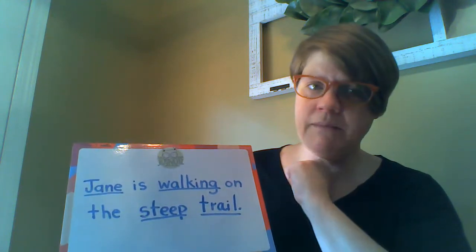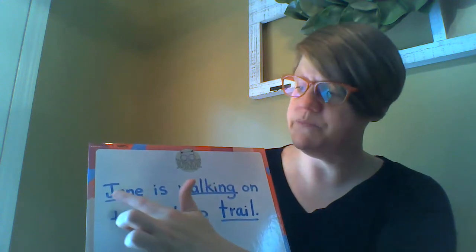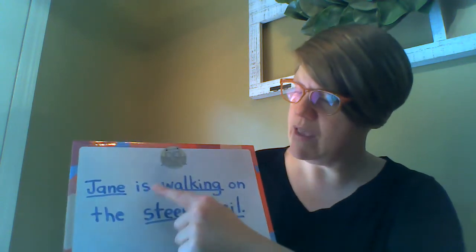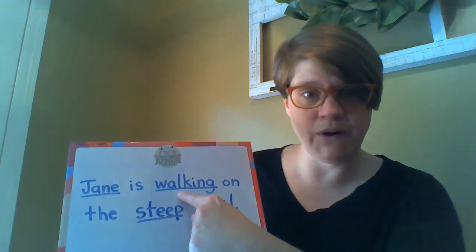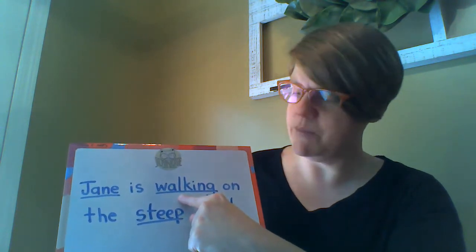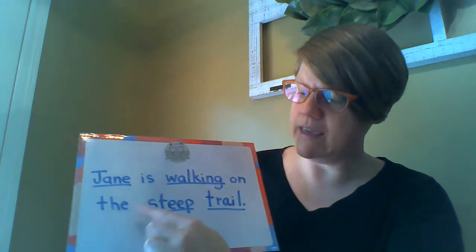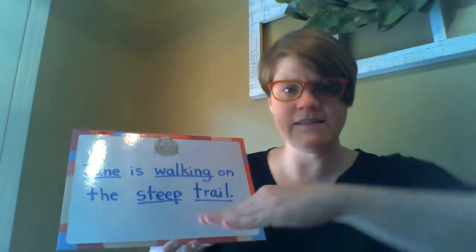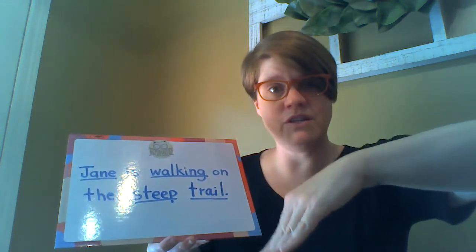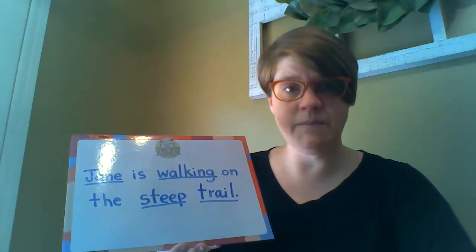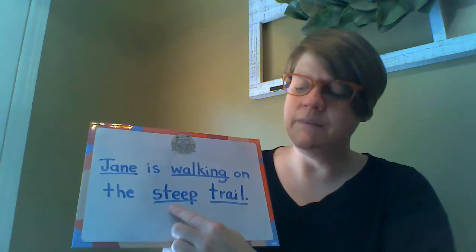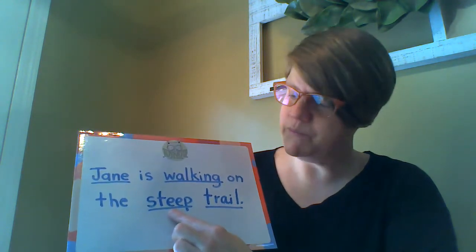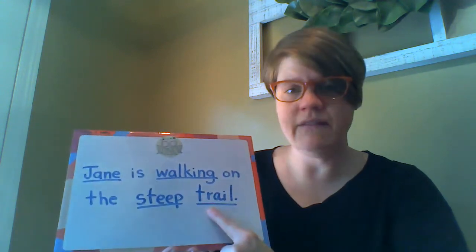I've underlined the nouns, verbs, and adjectives. 'Jane' is a noun because that is a person — and remember, uppercase J for her name, and also because it's the first letter of the sentence. 'Walking' is your action word, your verb, because that is something she is doing. 'Steep' is describing the kind of trail she's walking on — steep means a slanted area, so she's walking downhill. We would call this a sparkle word because it's not boring.